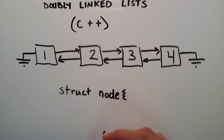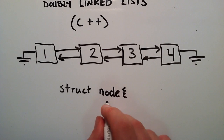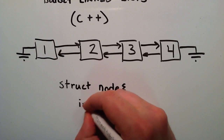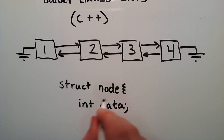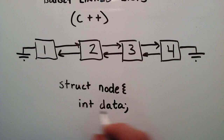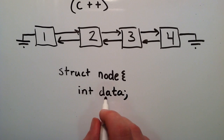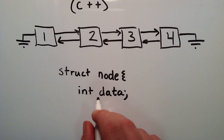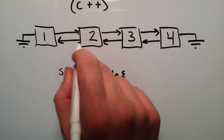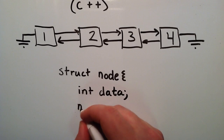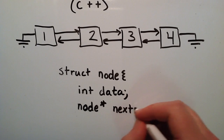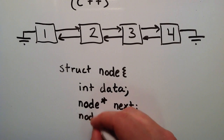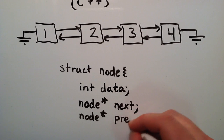Then we do an opening curly brace, and inside of here we're going to define what we want our nodes to look like. We want to have some data, so we do int data — this creates a section inside each node called data that can hold an integer value. The next thing we want to do is give our nodes the ability to point to both the next node and the previous node in the list, so we type in node* next and node* prev for previous.